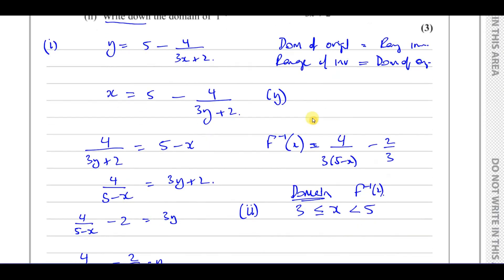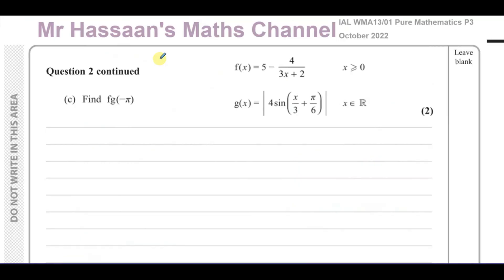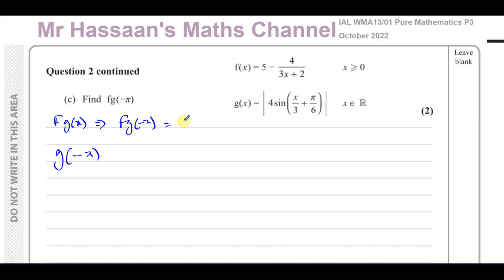That's part B done. Now for part C, we need to find the composite function fg(−π). There are two approaches: find an expression for fg(x) and substitute, or find g(−π) first and then substitute that value into f. The second approach is much easier here, so let's find g(−π) first.